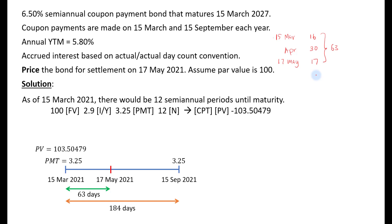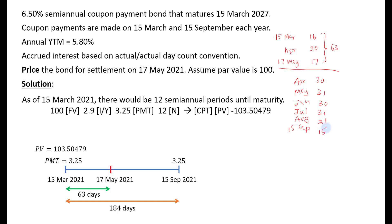For the full coupon period from 15 March to 15 September 2021: from 15 March to end of March is 16 days, then April 30, May 31, June 30, July 31, August 31, and up to 15 September is 15 days. Adding these gives 184 days. So the full coupon period T = 184 days.